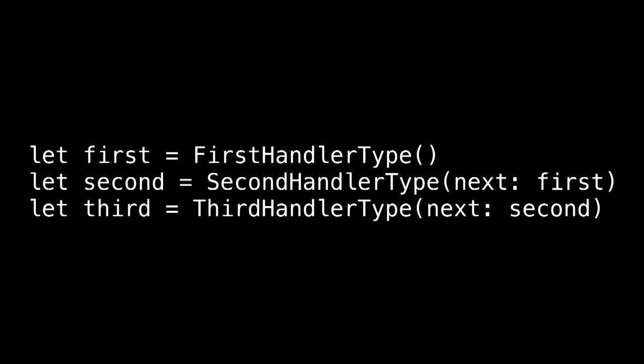So what if I wanted to do something like have a responder chain in my app? In this code demo, we've got a first handler type, and we assign it a variable. We set the second handler type so that the next handler for the second one will be the first, and the third handler will use the second instance and pass it on, and so on — making a nice little chain. All of those types subclass from a little operation that also subclasses from NSObject.